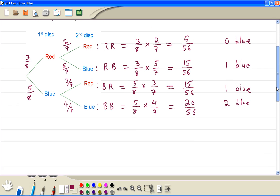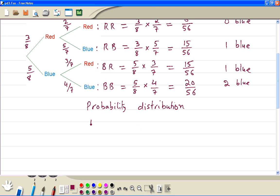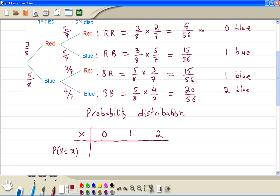Now we write the probability distribution. At the top we write all the possible outcomes of x. In this case, 0 blue, 1, or 2. Then we write the corresponding probabilities. 0 blue, which means both red, just this one, 6 out of 56.